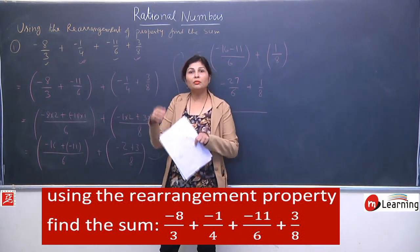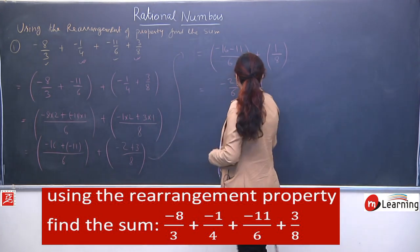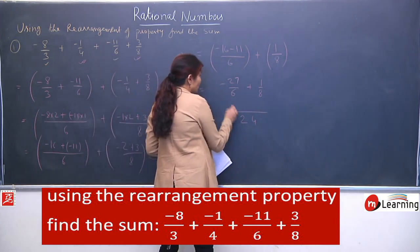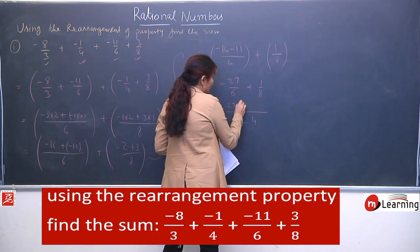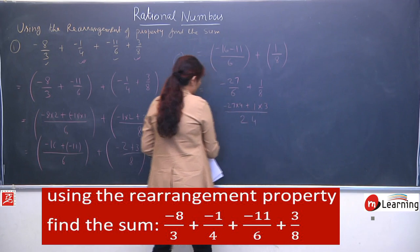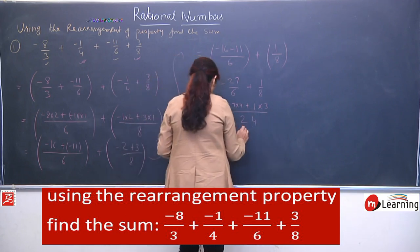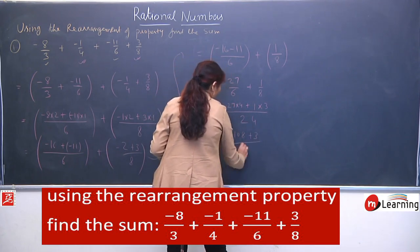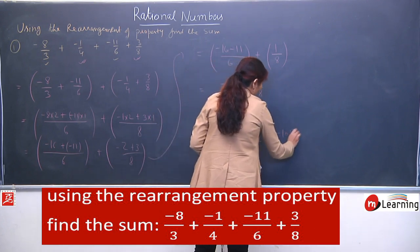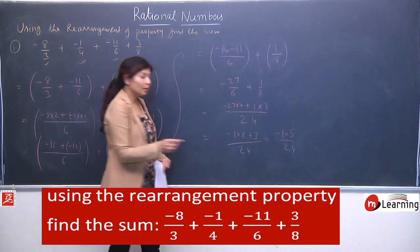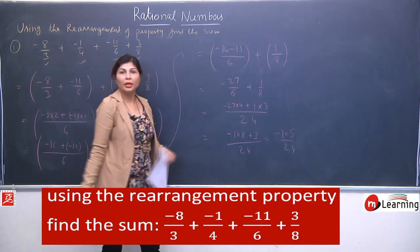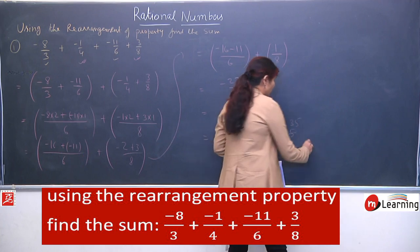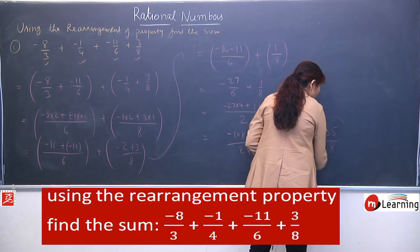Now our 4 terms are converted into 2 rational numbers. We take LCM of 6 and 8, which is 24. We get minus 27 into 4, which is minus 108, plus 3 upon 24. This gives minus 105 upon 24. The greater number has a negative sign so the answer is negative. After simplifying, 3 divides both: 3 eights are 24 and 3 thirty-fives are 105. The final answer is minus 35 upon 8.